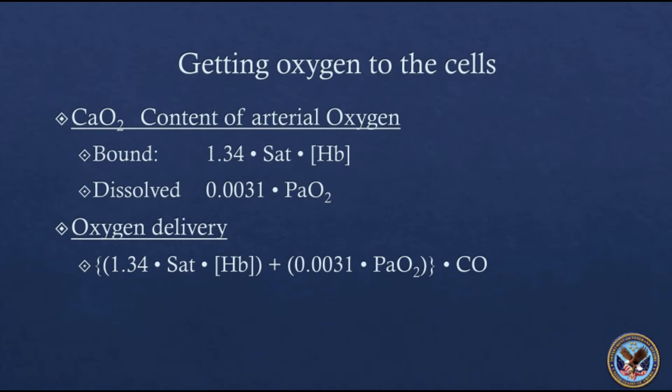Thinking about the terms you have, really this constant is constant, so that drops out. The saturations—you're good doctors, so you keep the saturation near 1.0. And this 0.031 times PaO2 really only counts if you have very low hemoglobin concentrations. Most of the oxygen is in hemoglobin, so that can be ignored. Essentially what you have for oxygen delivery is the product of hemoglobin times cardiac output. That's pretty easy to remember when you think about oxygen delivery and how it's getting around the body.